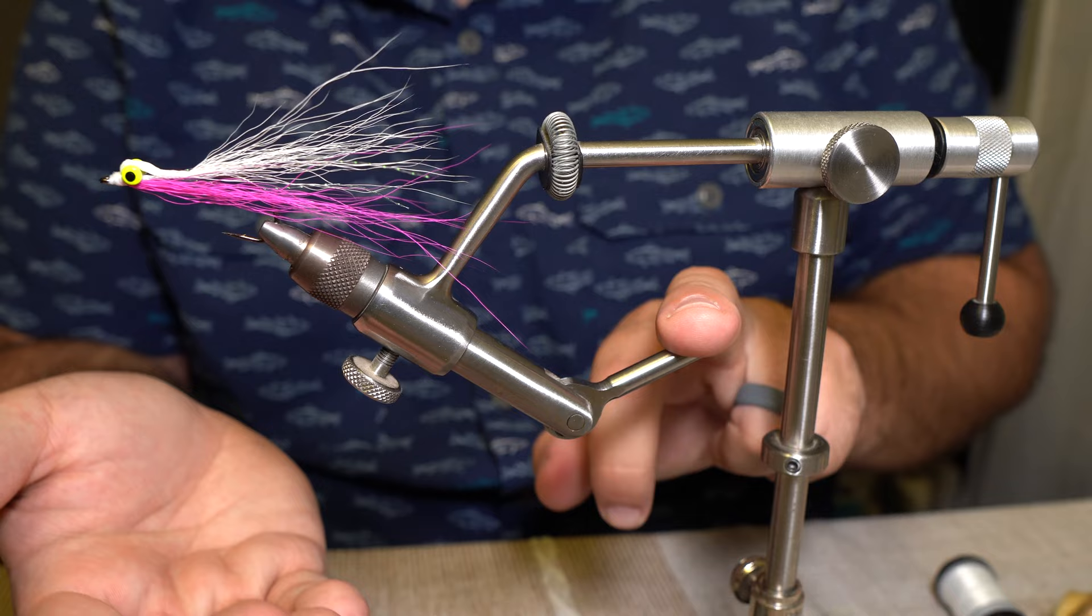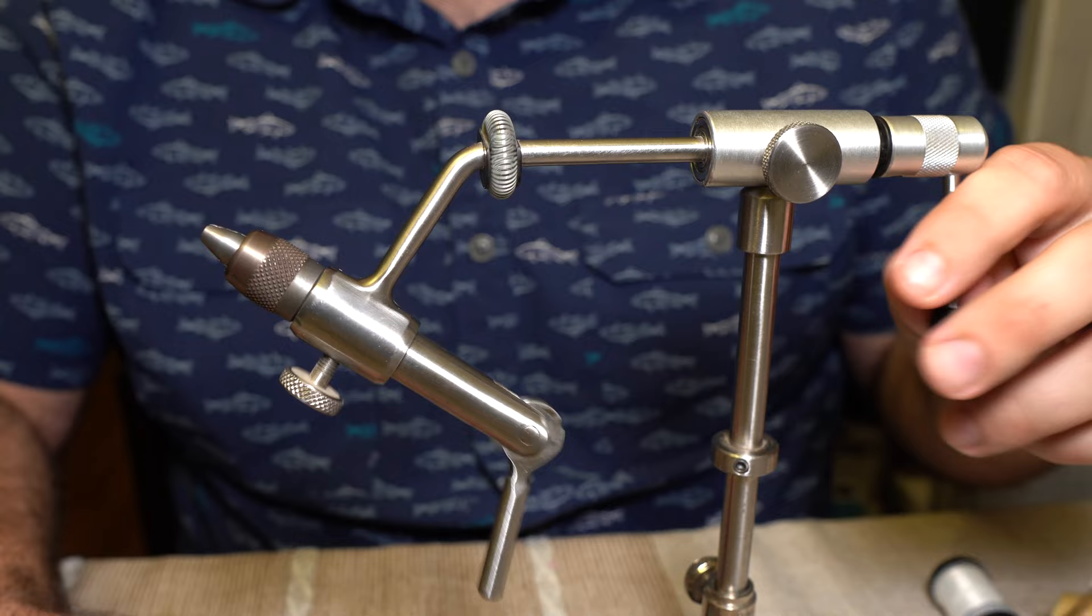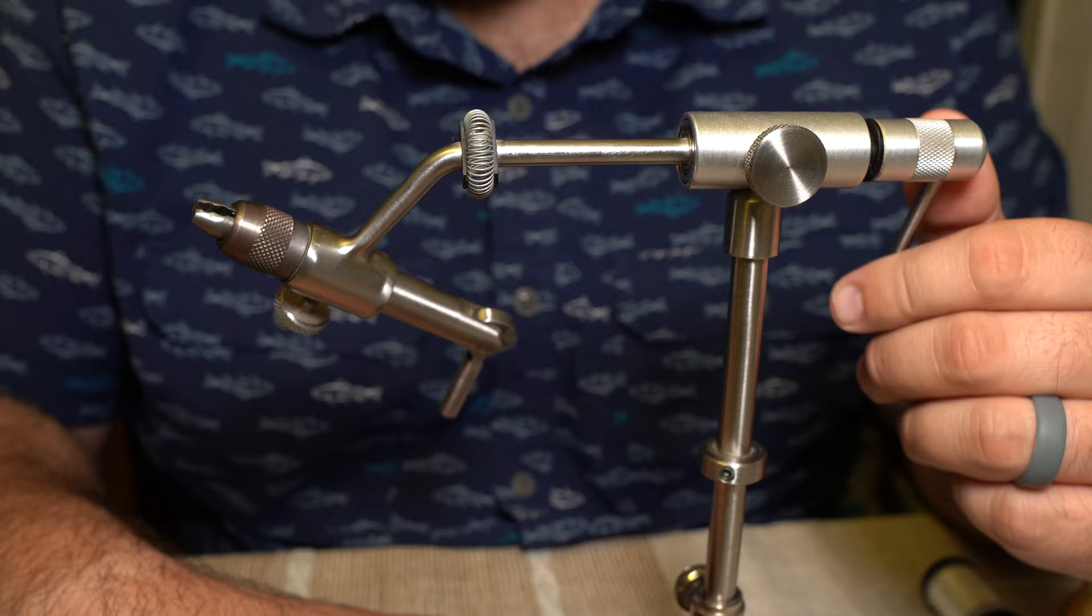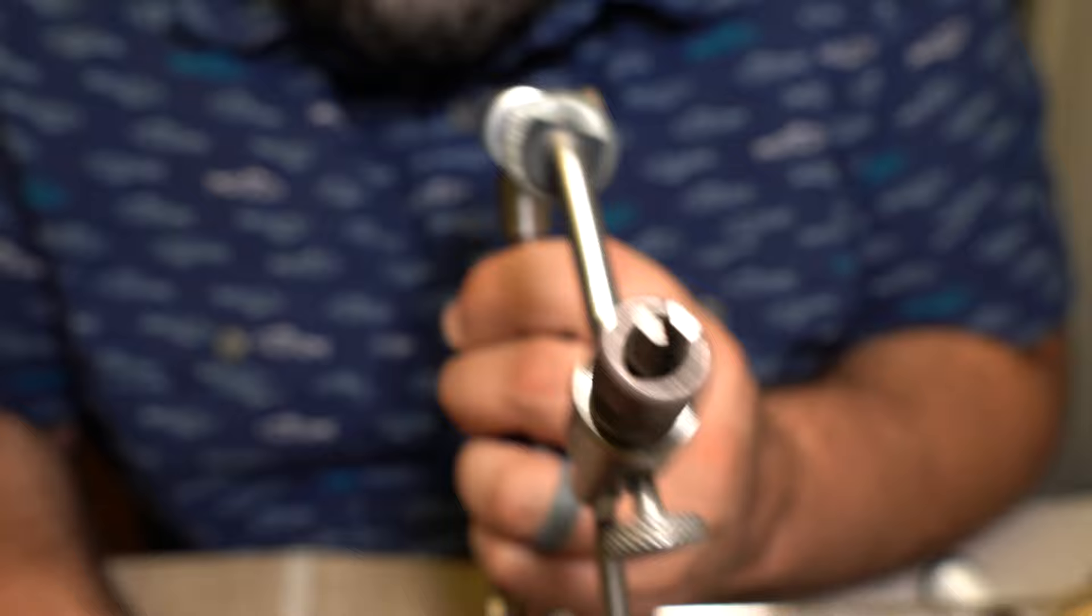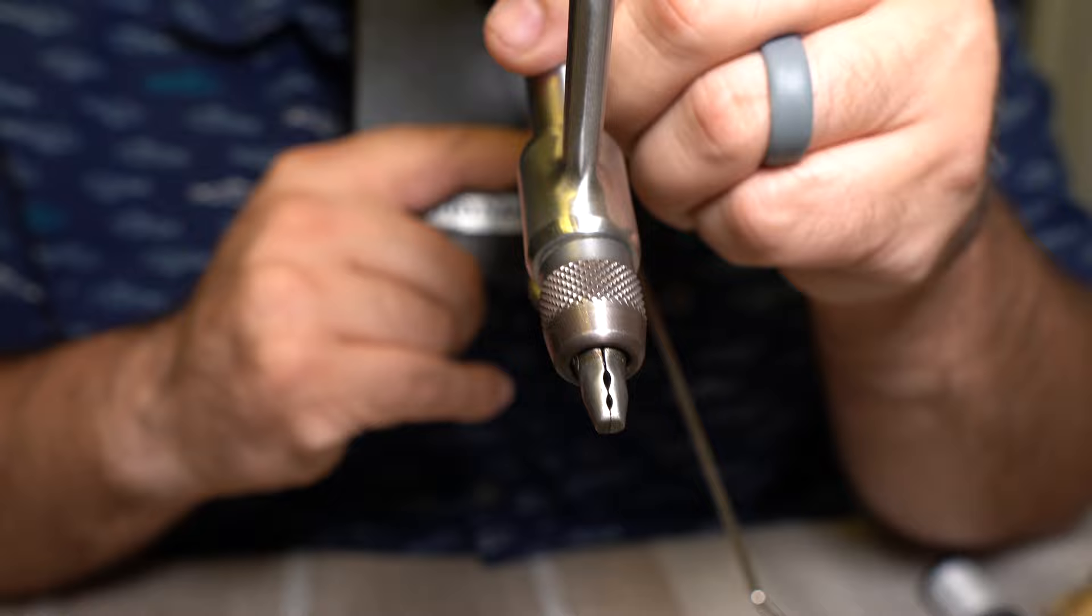This claims to hold from a size 32 to an 8 or 10-aught, which is a gigantic range. These jaws have two hook pockets. The front one for smaller hooks, the rear one for larger hooks.